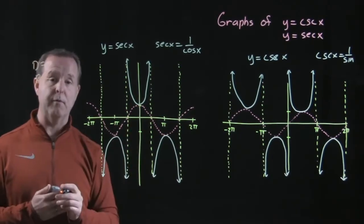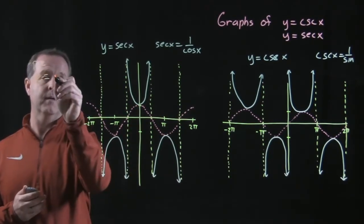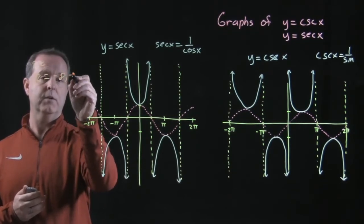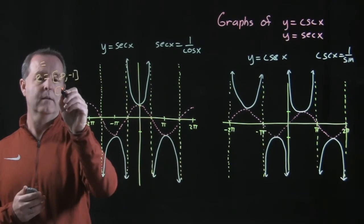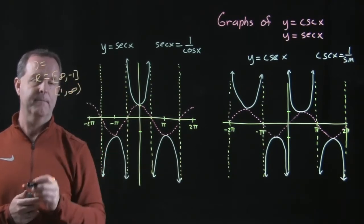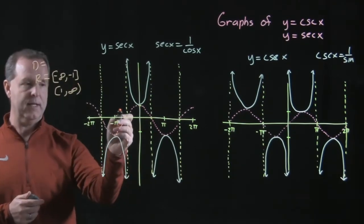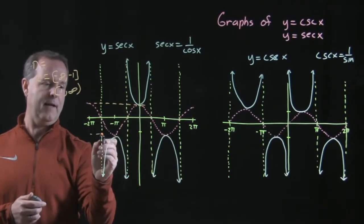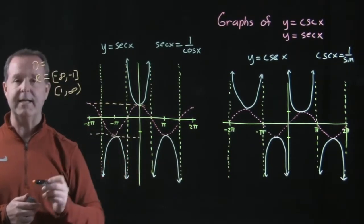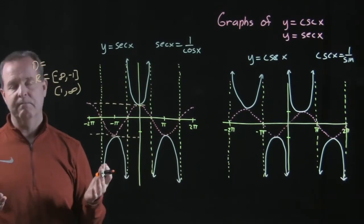The range for both of these are all values from negative infinity to negative one, and one to positive infinity, which means there's no values in between there and there. So between negative one and positive one, there's no values.